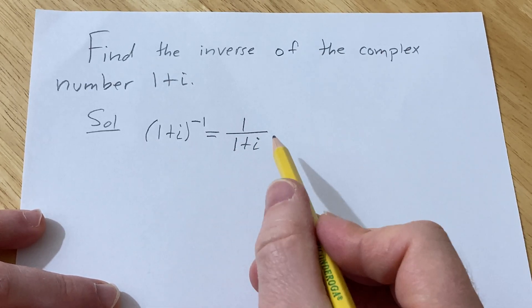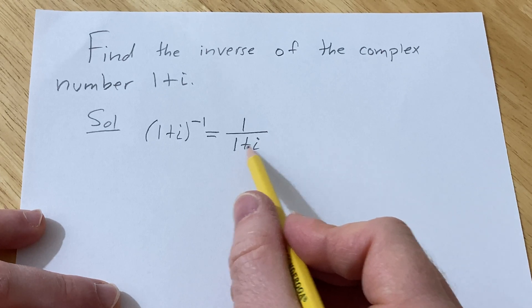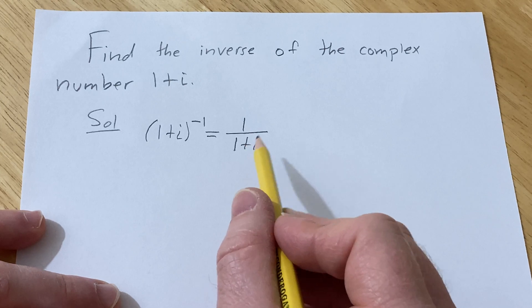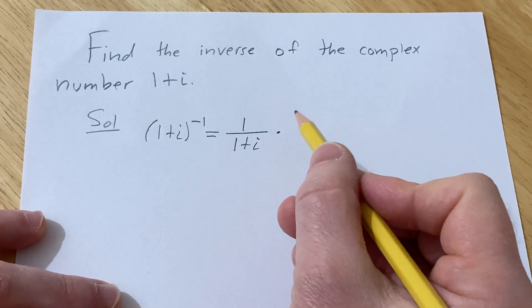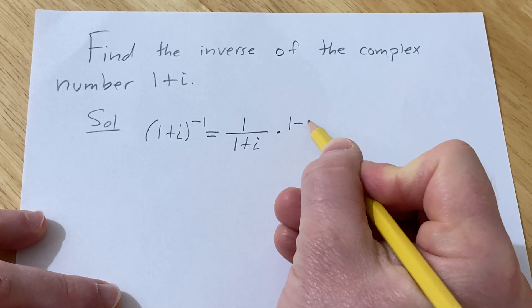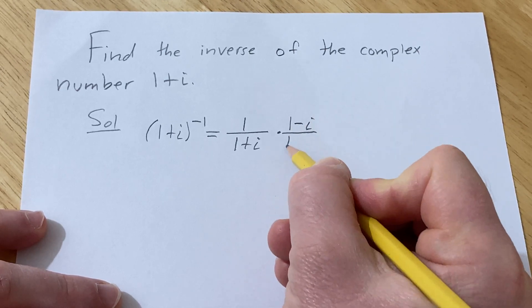So now what we're going to do is we're going to multiply by the conjugate of 1 plus i. The conjugate of 1 plus i is 1 minus i, and so to multiply by that, we're basically going to multiply by 1 in a very clever way. We have 1 minus i over 1 minus i.